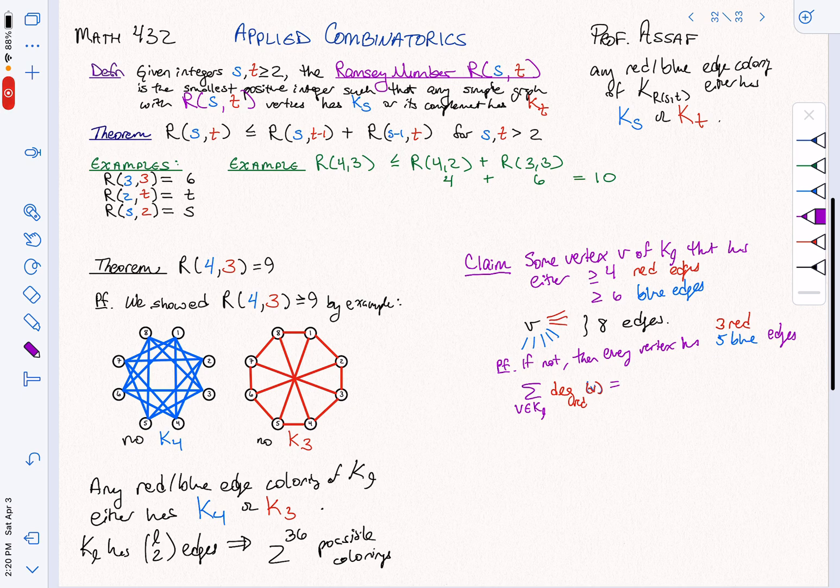Well, each one has three. So what we're going to get is nine times three, which is 27, which is odd. When you sum up the degrees of the vertices, even if you're just doing it of a subgraph, you can't get an odd number. It has to be even. So there is your contradiction, and that's why it's true. Because if not, we get a contradiction, and it would have worked if I'd done the blue as well. So this is really the crux of the argument.